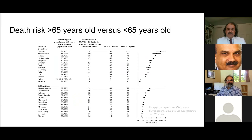Comparing death risk in people above 65 versus those below 65: in Canada the risk gradient is one-hundred-fold. There's a hundred-fold difference in risk of death for someone above versus below that age threshold. In Switzerland it's 80-fold, Ireland 76-fold, Netherlands 67-fold. Most European countries fall between 30- and 100-fold. Most U.S. locations are between 20- and 50-fold. India and Mexico, with very young populations, show a much less steep gradient of 8- to 9-fold relative risk.